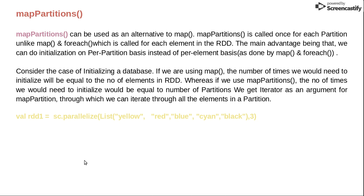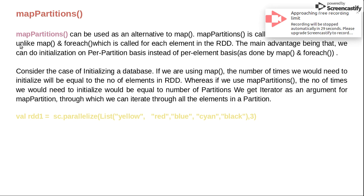mapPartition is a more advanced transformation. Unlike map or forEach which is called for each element, mapPartition is called once for each partition. Use mapPartition when you want to apply your function on a complete partition rather than a single element. An example use case is setting up a database connection — similar to the setup phase in MapReduce. This will be explained further in the next slides.